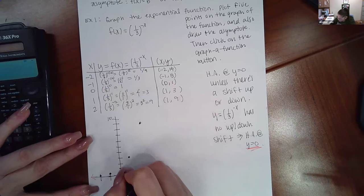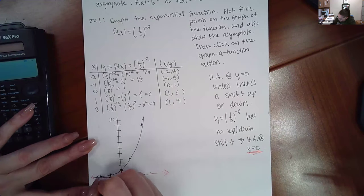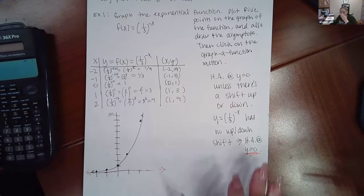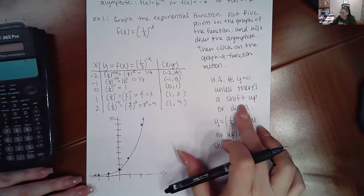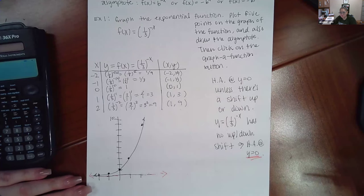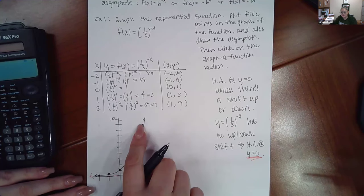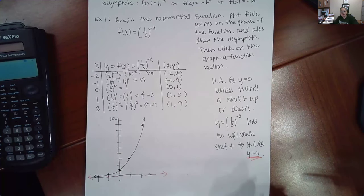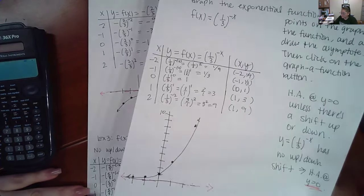And so then our graph should have been going in this direction. There we go. Now that makes more sense. Now, again, you're not adding or subtracting a constant on the side, so it's not shifting up or down, which means the horizontal asymptote is still at y equals zero. So once you draw that horizontal asymptote, you draw the five points that we just found, you click, then click on the graph of function button, and it should draw this in there for you, and then you can get it marked correct.